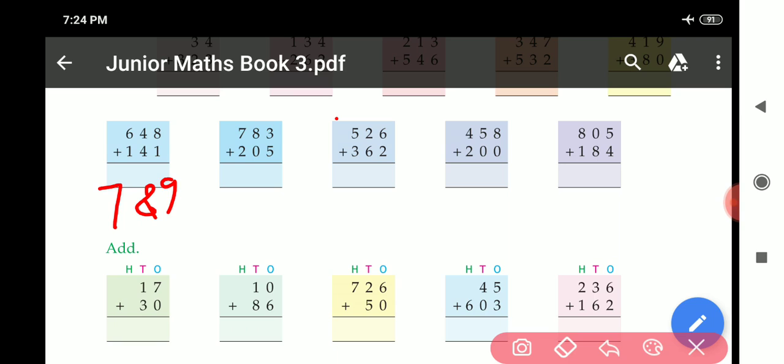Now come to third part. 6 plus 2, 8. 6 plus 2, 8 and 5 plus 3, 8. So answer is 8, 8, 8.